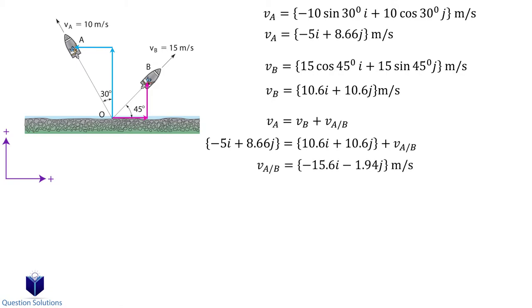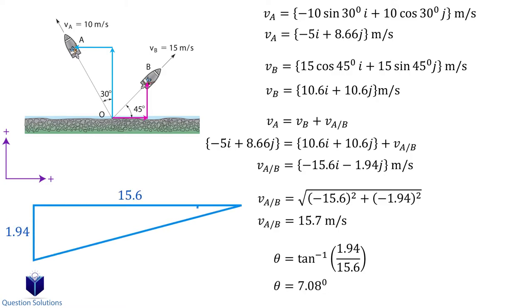We can now find the magnitude of velocity. The angle can be found using tan inverse. To find how long it takes for the boats to be 600 meters apart from each other, all we need to do is divide distance by velocity. We get 38.2 seconds. Those are our answers.